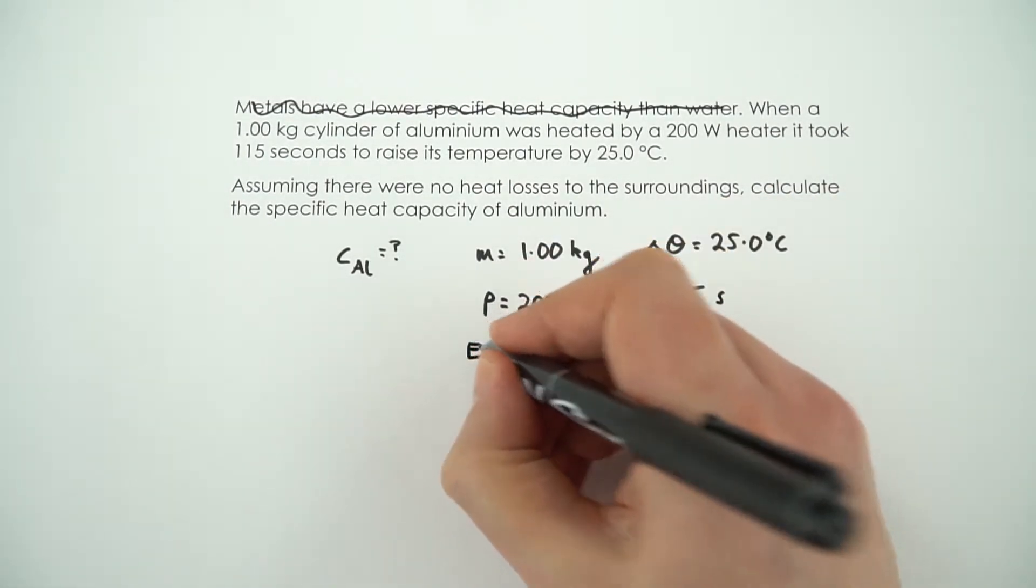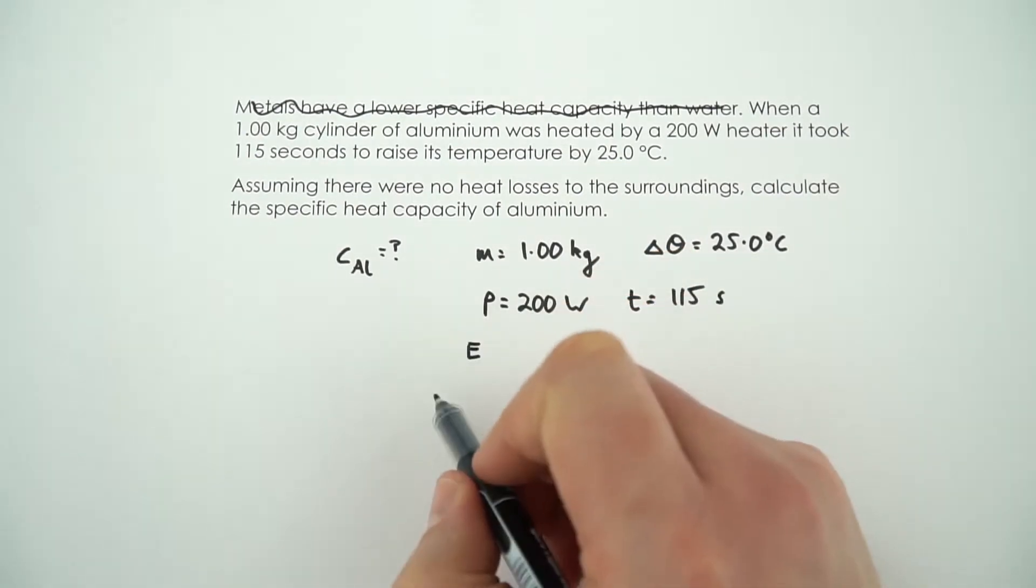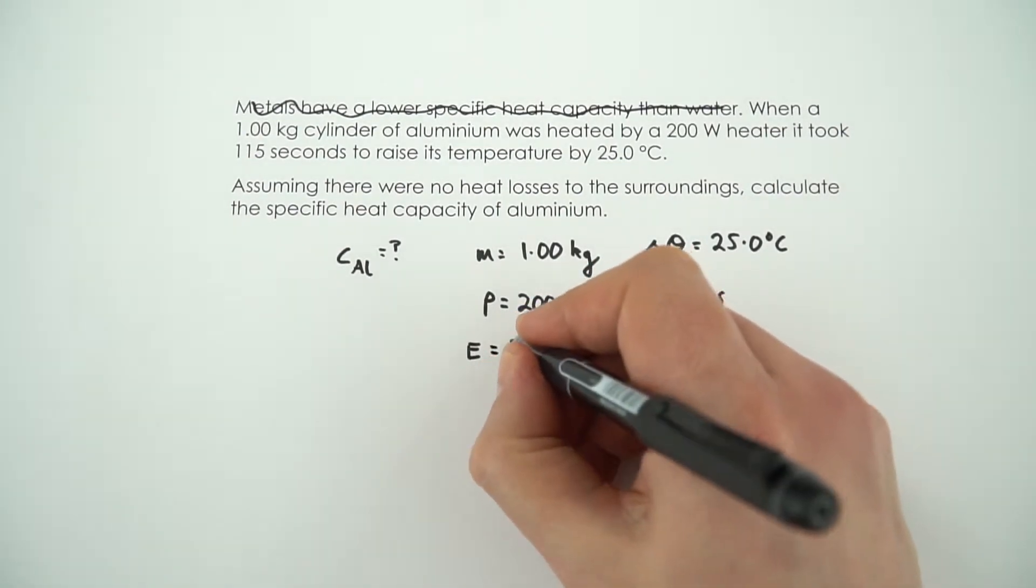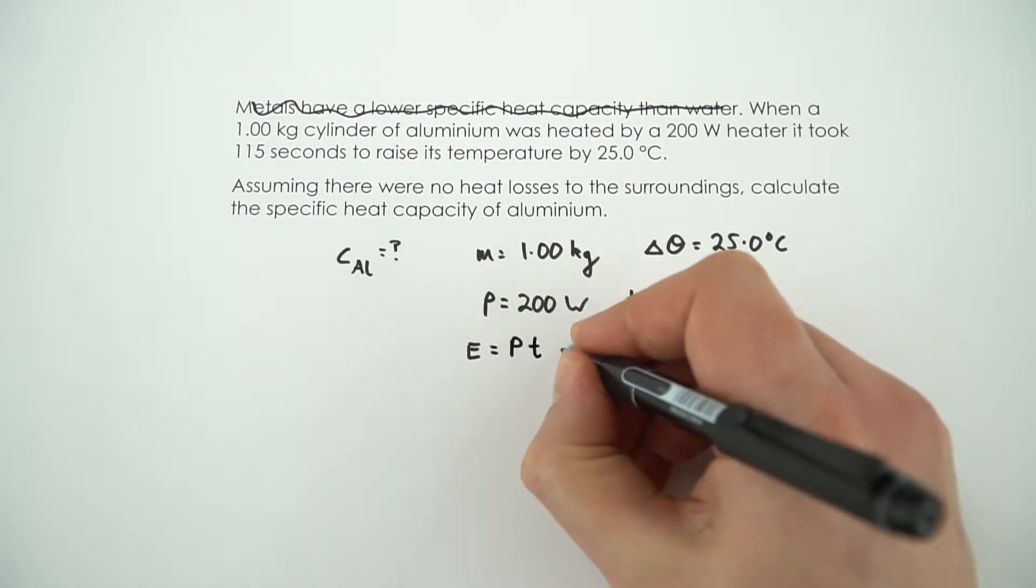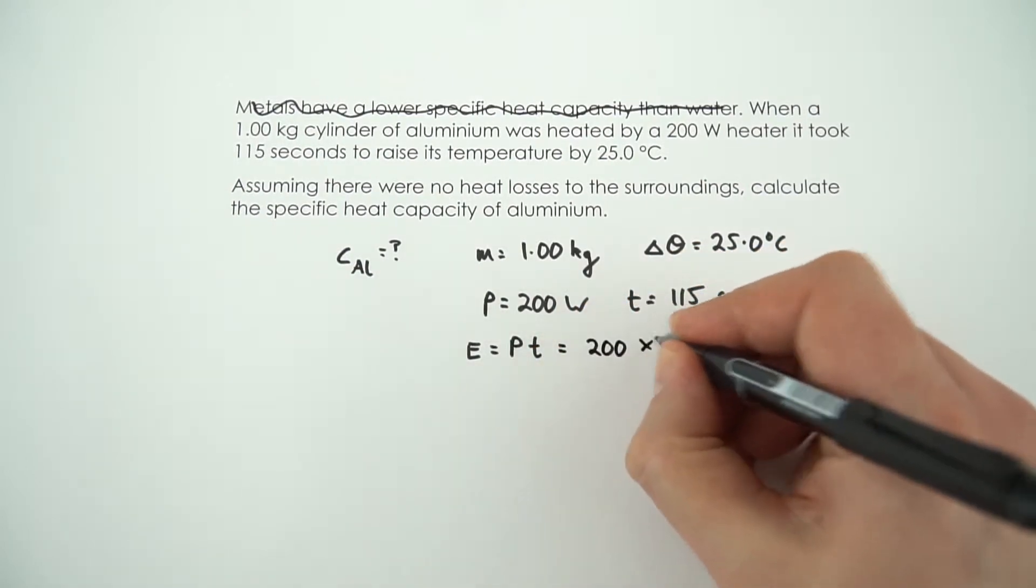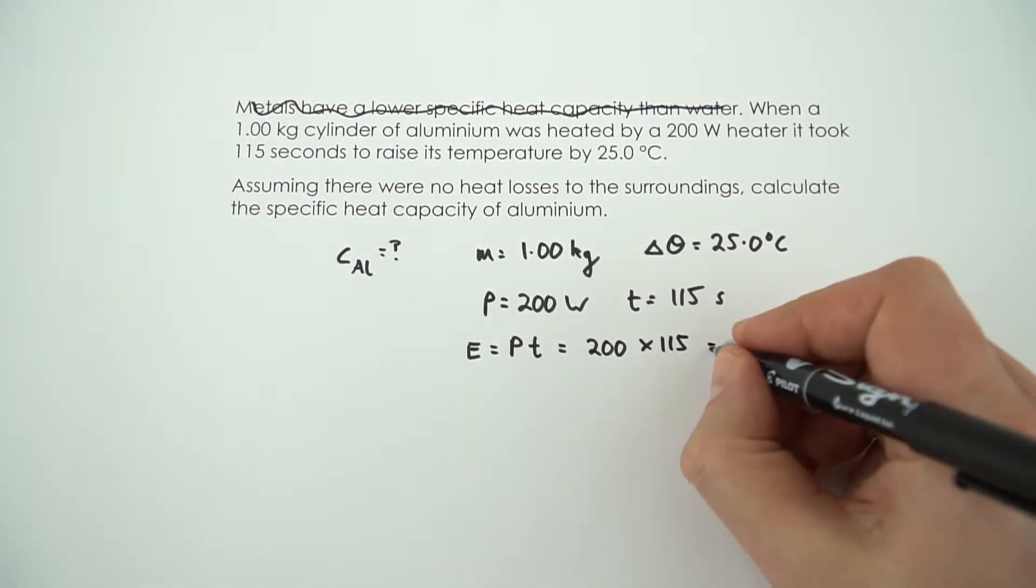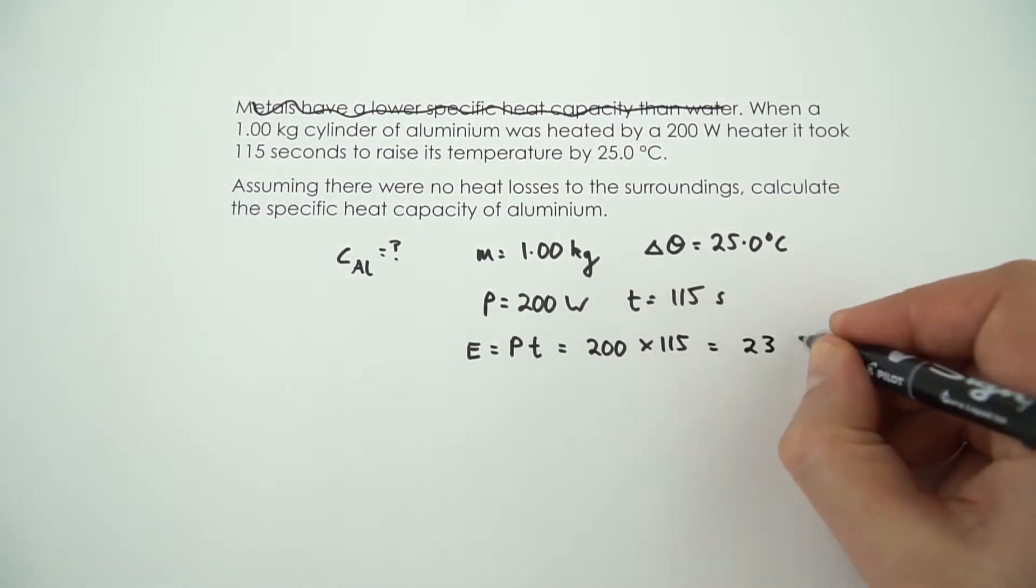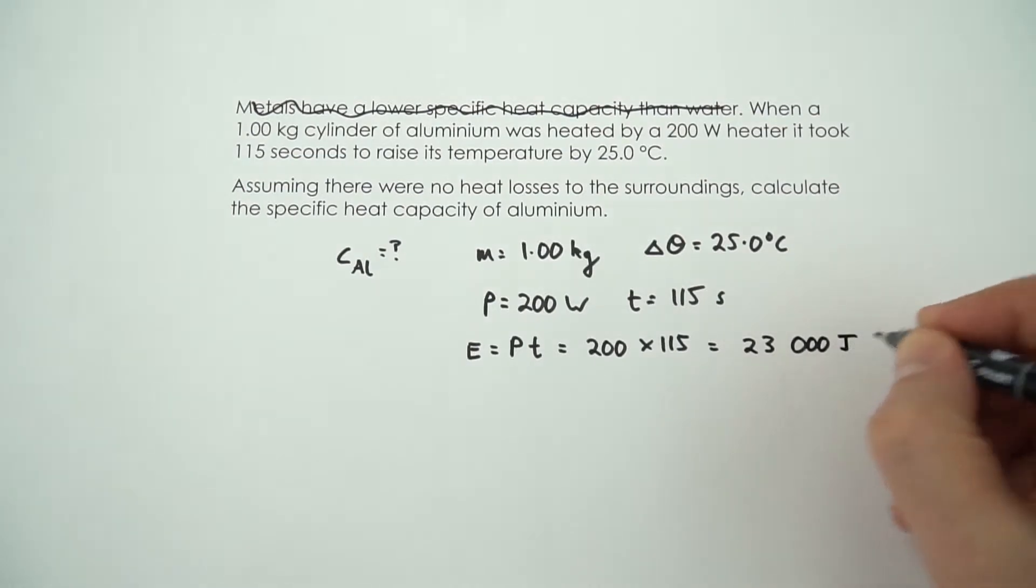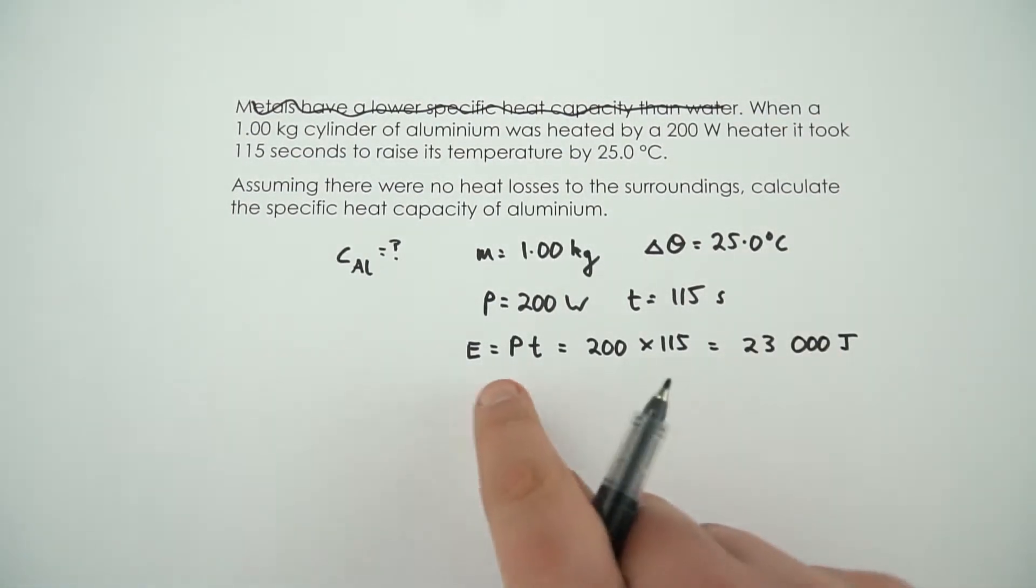And energy, because power is equal to energy divided by time, the energy transferred is going to be equal to the power times the time, so that's equal to 200 times 115. And if you put that into your calculator that comes out as 23,000 joules. So I'm just going to leave that in joules. So now we know the energy, the mass, the change in temperature.